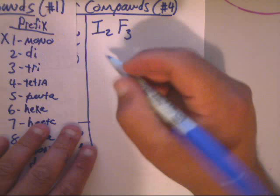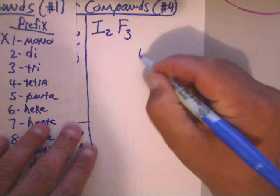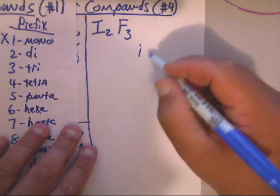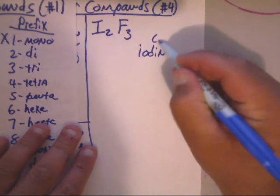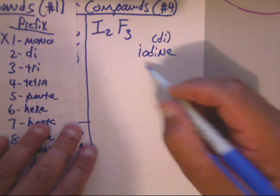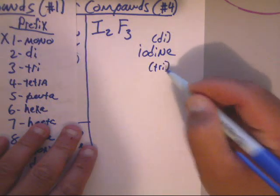Okay, now let's go and look at another one. Let's look at I2F3. Okay, we're going to look at it and let's concentrate on it. Make a list out again, we've got two iodine. So we'll make a list: iodine is I-O-D-I-N-E. You've got iodine, two of those, so there's di-. We've got three fluorines, so there's tri-.